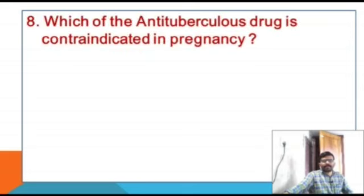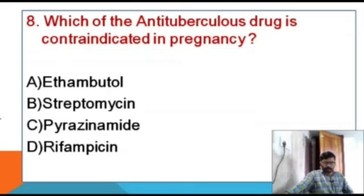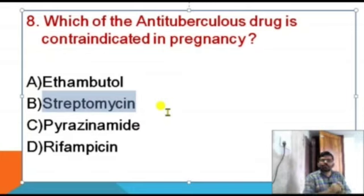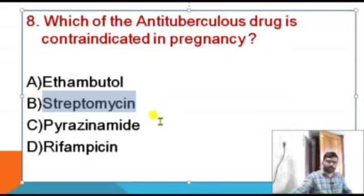Which anti-tuberculous drug is contraindicated in pregnancy? Options: ethambutol, streptomycin, pyrazinamide, rifampicin. The correct answer is streptomycin. Streptomycin is contraindicated in pregnancy because it is an ototoxic drug that can cause hearing impairment in the fetus, so it should be avoided during pregnancy.